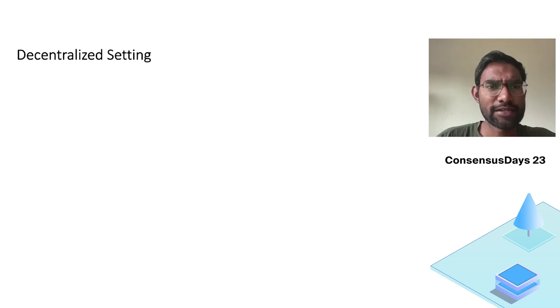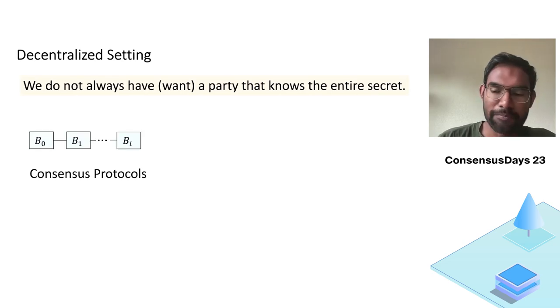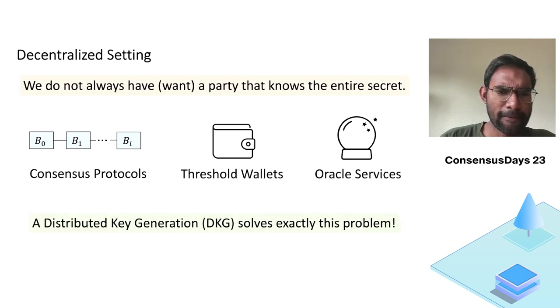But in decentralized settings, we don't always have or sometimes we don't want a party that knows the entire secret. So examples are consensus protocols, threshold wallets, particle services, and the distributed key generation problem exactly solves this problem where we don't have a trusted party that knows the entire secret.